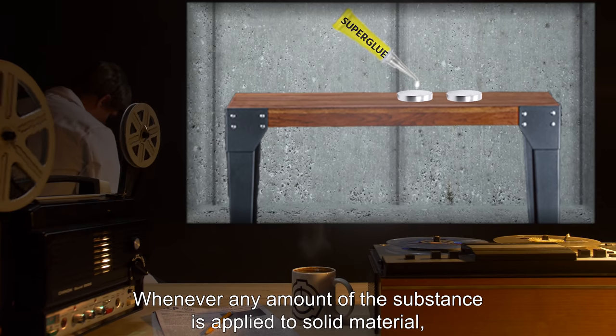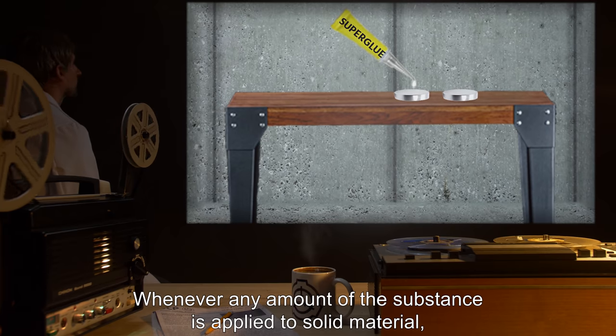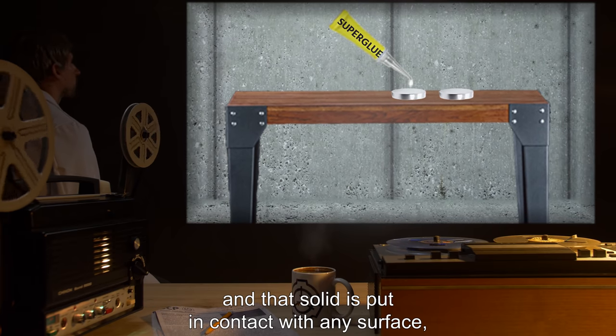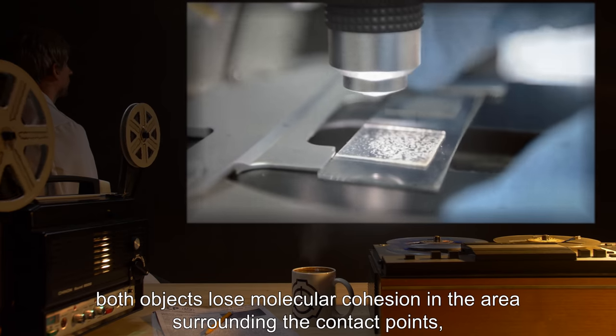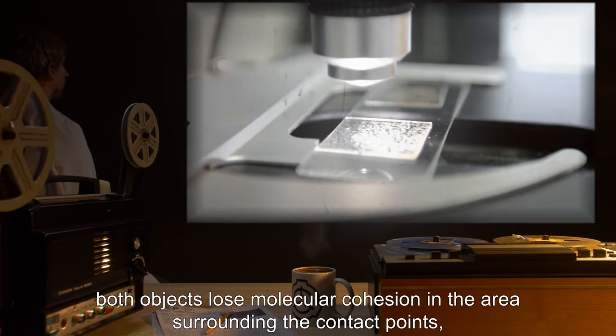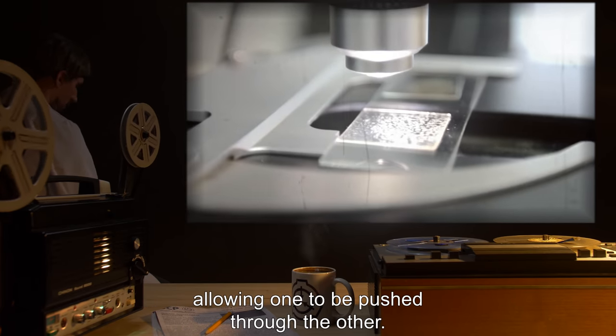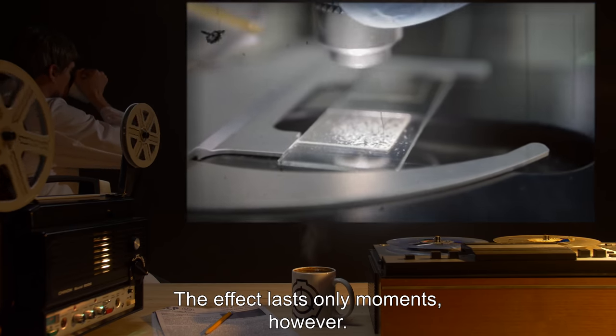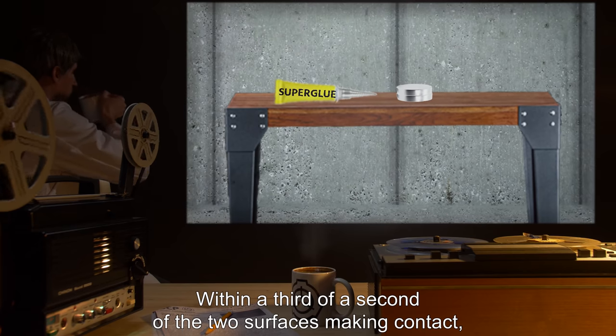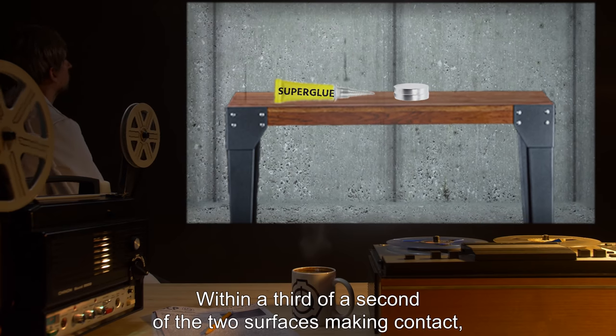Whenever any amount of the substance is applied to solid material and that solid is put in contact with any surface, both objects lose molecular cohesion in the area surrounding the contact points, allowing one to be pushed through the other. The effect lasts only moments. However, within a third of a second of the two surfaces making contact, the ability of each to pass through the other is nullified, leaving both permanently bonded together.